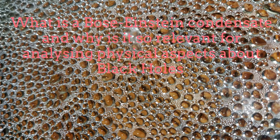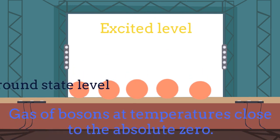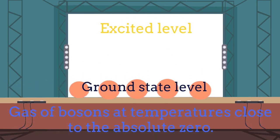Now let's talk about Bose-Einstein condensates. The first question which comes to our minds is: what is a Bose-Einstein condensate and why is it so relevant for understanding the physics of black holes? Imagine a gas of bosons, here represented by the red balls appearing on the screen. If we decrease the temperature of the system up to some level, all the bosons will try to occupy the lowest energy level. When this occurs, all the bosons at the lowest energy level start to show a collective behavior — they start to behave as a single entity. This is precisely what we call a Bose-Einstein condensate.